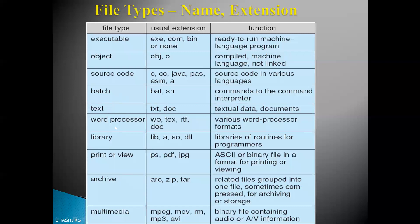Word processor files may have extensions .wp, .tx, or .rtf. Library files may have extensions .lib, .a, .so, or .dll. Here, .ta stands for archived library files using static linking, and .so stands for shared object files using dynamic linking. Printing or viewing file types include .ps (PostScript), .pdf, and .jpg — PostScript files are commonly used printing formats in the publishing industry. Archive files like .zip or .tar are used for compressing files and sending them over the network.